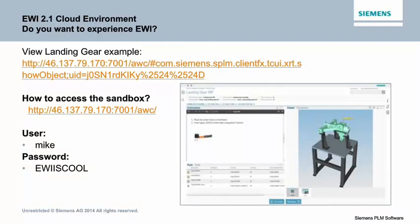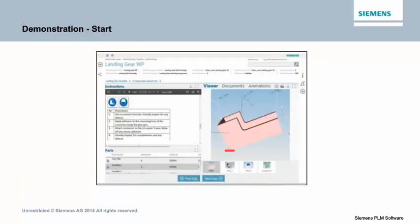Before we go to the live demonstration, we have here the link to our Amazon environment — EWI on our Amazon Cloud. This is open to all, whether you are a Siemens employee or even a customer or potential customer. You can access this link to experience EWI yourself. We have the credentials that you can use, and there is also a direct link to the landing gear example which we will use. I encourage you to try it yourself and give us your feedback.